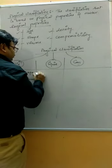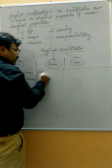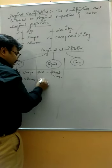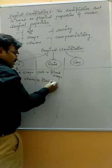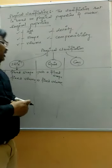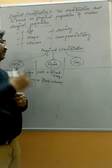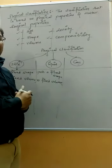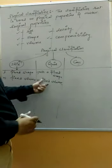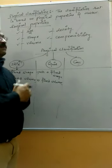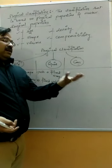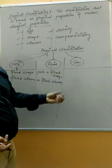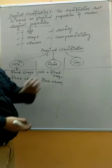If we talk about liquid, it does not have a fixed shape but its volume is fixed. Suppose if we have one liter of milk, it remains one liter whether you take it from Karnataka, Delhi, or anywhere else. But if we take liquid in a bowl it takes the shape of the bowl; in a beaker it takes the shape of the beaker; in a glass it takes the shape of the glass.